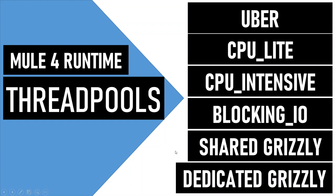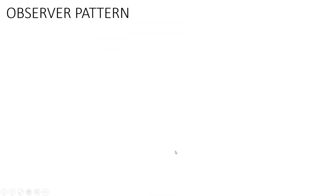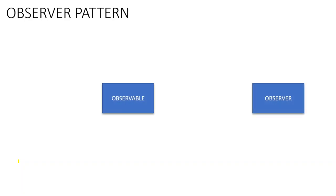To get started, let's understand a few basics — the observer pattern. The observer pattern has two components: the observable and the observer. The observable is something that can be observed. You can also think of it as a publisher and subscriber mechanism, where the observable is the publisher and the observer is the subscriber.